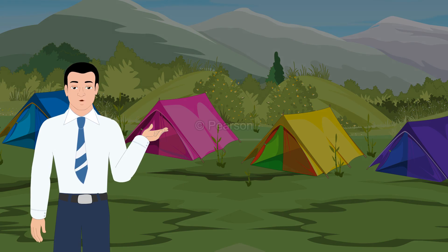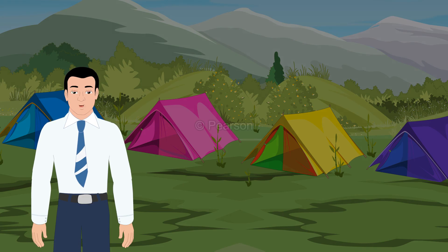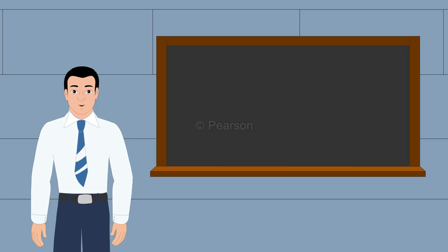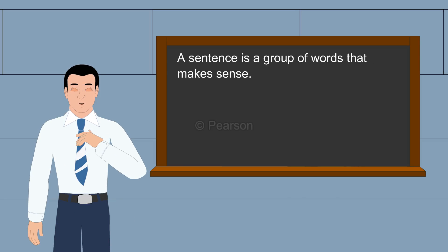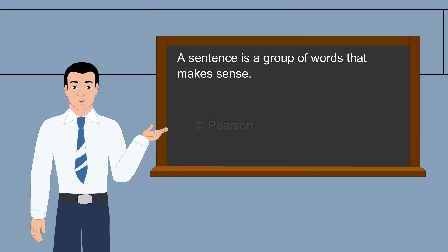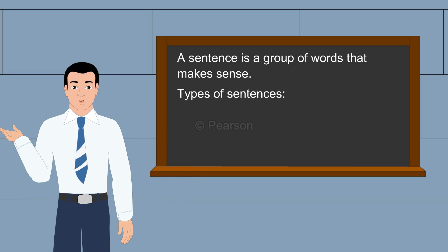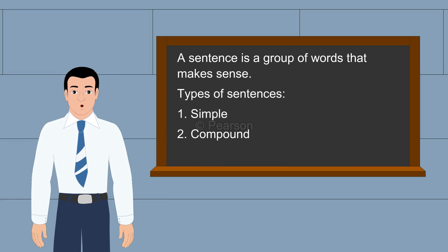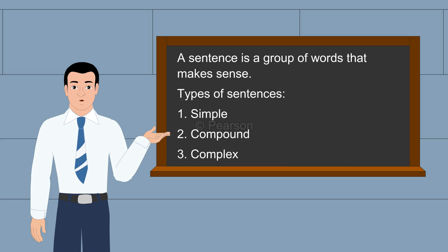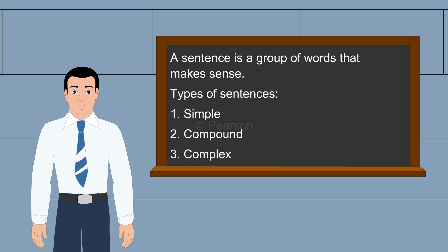Hello there. Want to go camping? But first, let's study about sentences. You all know that a sentence is a group of words that make sense. There are three types of sentences: simple, compound and complex. Let us talk about them in detail.